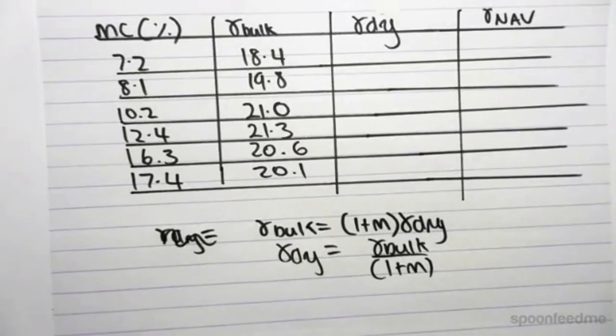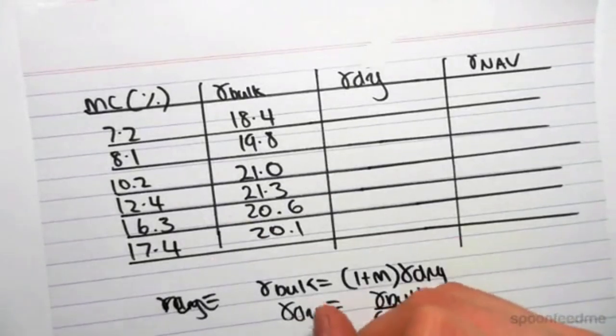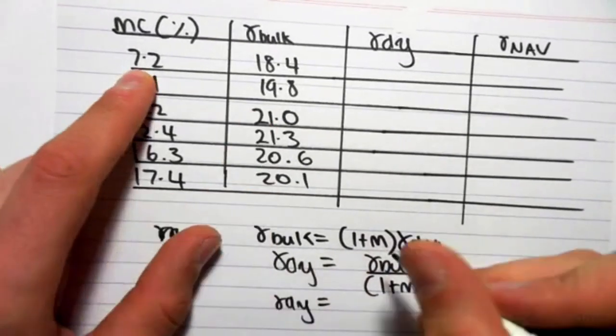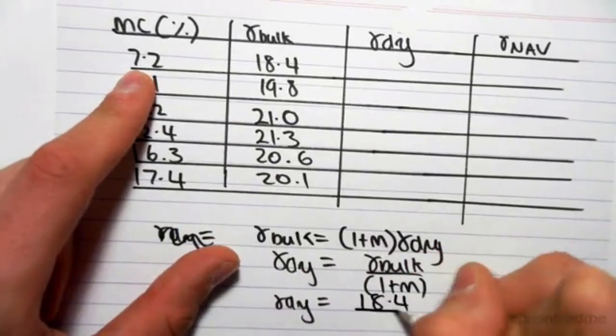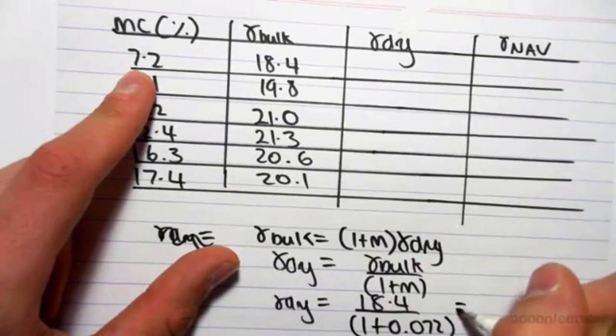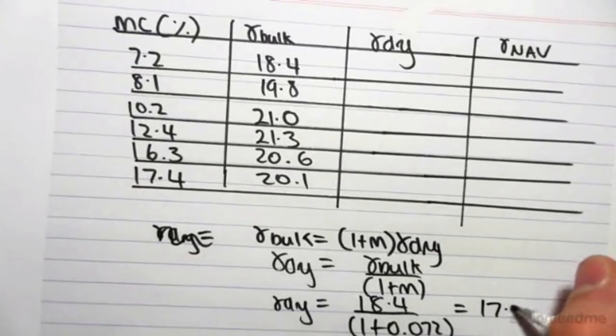Doing this problem, let's just do it for the first one. The dry unit weight at a moisture content of 7.2%, so it would be 18.4 on top of one plus 0.072. And if we were to calculate this, we would get 17.2.